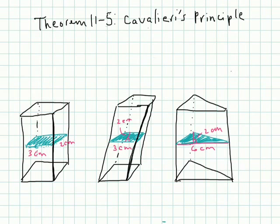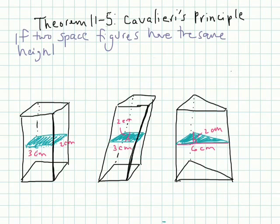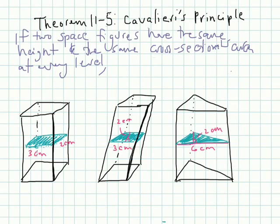Cavalieri's principle. I'm going to write this out with you guys. It basically says that if two space figures have the same height and the same cross-sectional area at every level, then they have the same volume. And let's look at what they're saying.